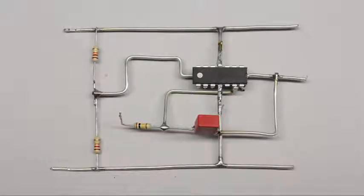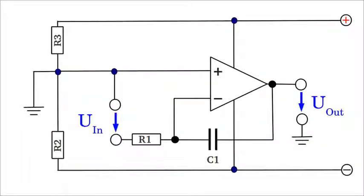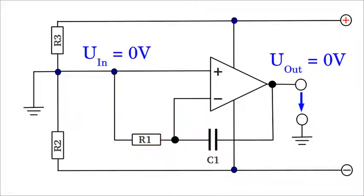The central element of the function generator used here is an active integrator. There is negative feedback provided by the capacitor, hence the potentials at the inverting and the non-inverting inputs are held equal by the operational amplifier. The non-inverting input is connected to ground, while the inverting input is connected to the input terminal of the circuit through resistor 1. If the input clamp is connected to ground, the difference in potential between the inverting and the non-inverting input is 0V, hence the resulting output voltage of the operational amplifier is 0V too.